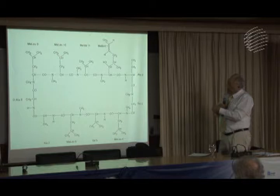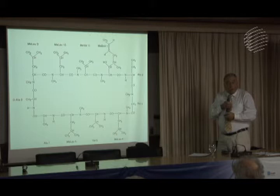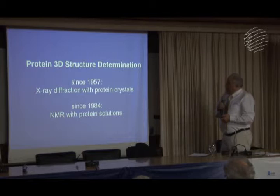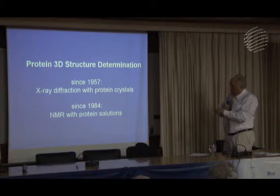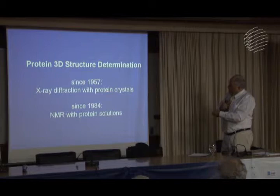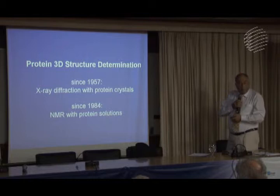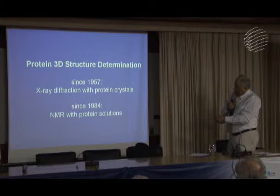Again, you need the three-dimensional structure. You cannot make this kind of reflection if you only know the chemical structure of the drug. How has protein three-dimensional structure determination been developed over the years? Since 1957, we have X-ray diffraction with single crystals of proteins that was able to produce three-dimensional structures. And since 1984, we are able to determine three-dimensional protein structures in solution by NMR — nuclear magnetic resonance.